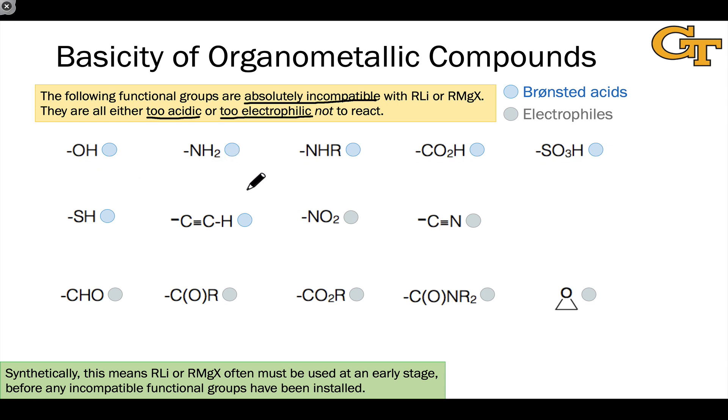On this slide, I've listed a number of functional groups that are either too acidic or too electrophilic not to react with organolithiums or organogrignards. And just to go through the list briefly, starting with the Bronsted acids, we can look at the pKa's of everything with a blue dot next to it. We'll see that all of these have a pKa that's lower than the typical hydrocarbon pKa, which is around 40 to 50.